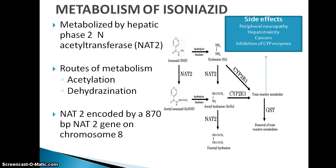Isoniazid is metabolized by the hepatic phase 2 N-acetyltransferase enzyme, abbreviated NAT2. The NAT2 is encoded by an 870 base pair NAT2 gene located on chromosome 8 in humans. There are basically two routes of metabolism of isoniazid in the human liver: acetylation and hydration. The acetylation pathway, as shown here, is catalyzed by the NAT2 enzyme.